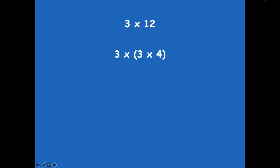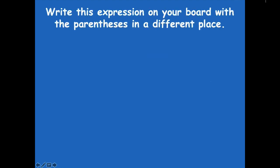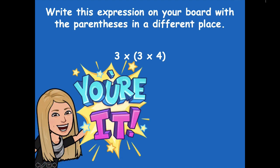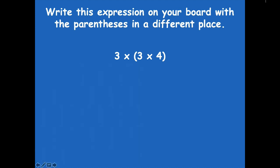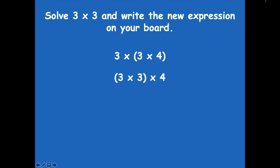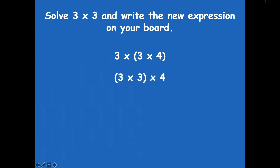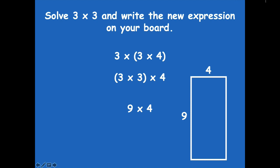Let's go back to three times 12. Why are these expressions equal? Because 12 is just three times four — I found a new multiplication for 12. Write this equation with the parentheses in a different place, shifting them to the other two factors. You should get three times three, in parentheses, times four. Now solve three times three and write the new expression. Three times three is nine, so nine times four is your new expression. You could draw a quick rectangle to represent nine by four.